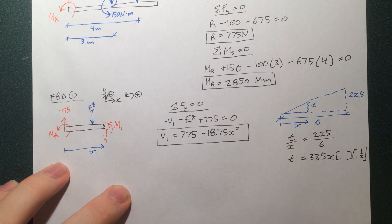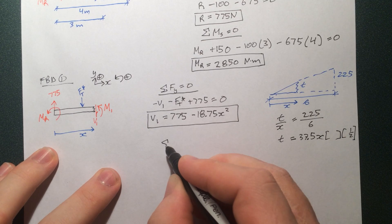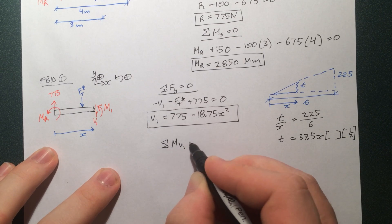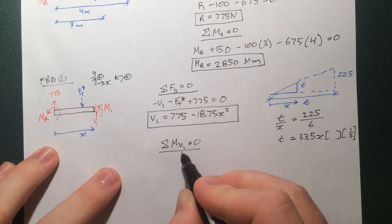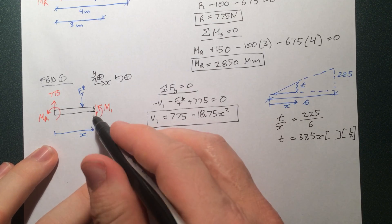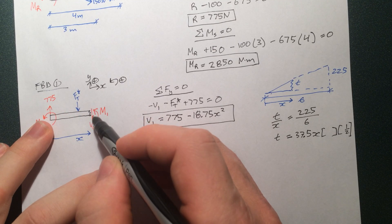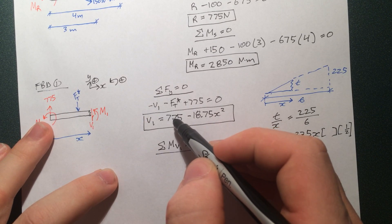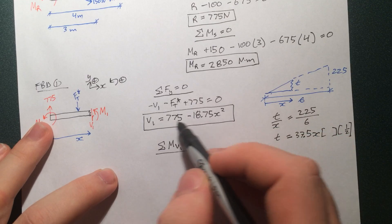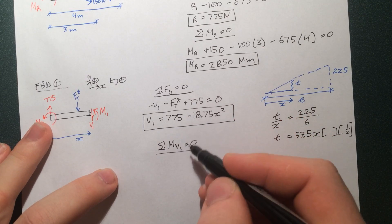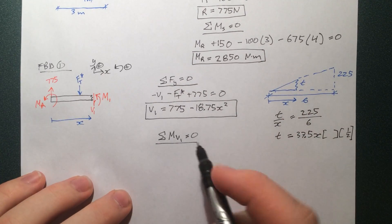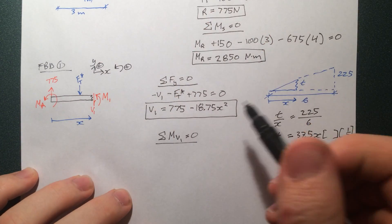So moving on to the moments. Notice here again, I take it about the v1, so that I need to use the reaction at the support instead of taking it at the reaction and having to use v1, so I only just found out what v1 is, so if I need to use it, there is a chance I made a mistake here, and then that mistake would propagate into my moment. This way, I keep the mistake out of it if I would have made one.